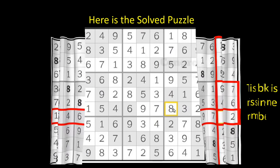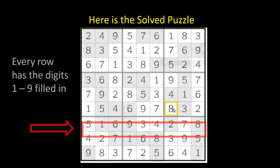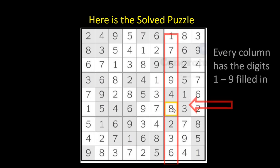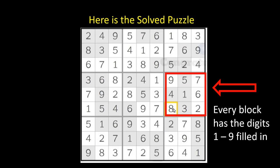Here is the solved puzzle. Every row of nine cells has all nine digits filled in. Every column of nine cells has all the digits one through nine filled in. And every three by three block has all the digits one through nine. No number is repeated in any row, column, or block.